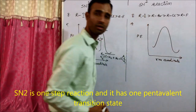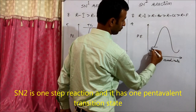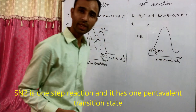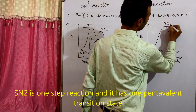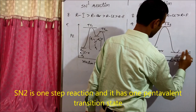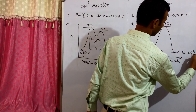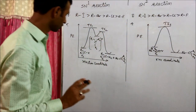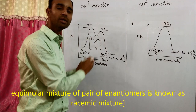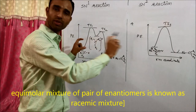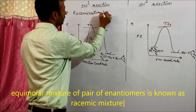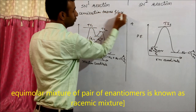In SN2, the potential energy diagram shows only one transition state — the pentavalent transition state — and then directly gives the product. In SN2, only inversion of configuration takes place. In SN1, both retention and inversion occur, meaning both enantiomers (D and L) are formed — so racemization takes place in SN1.